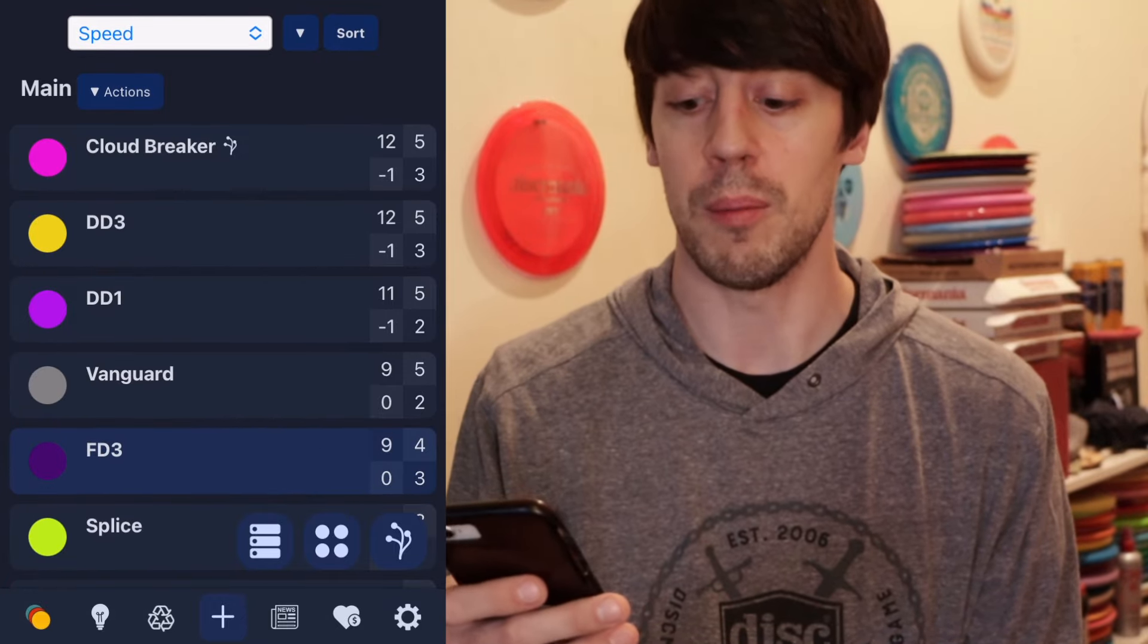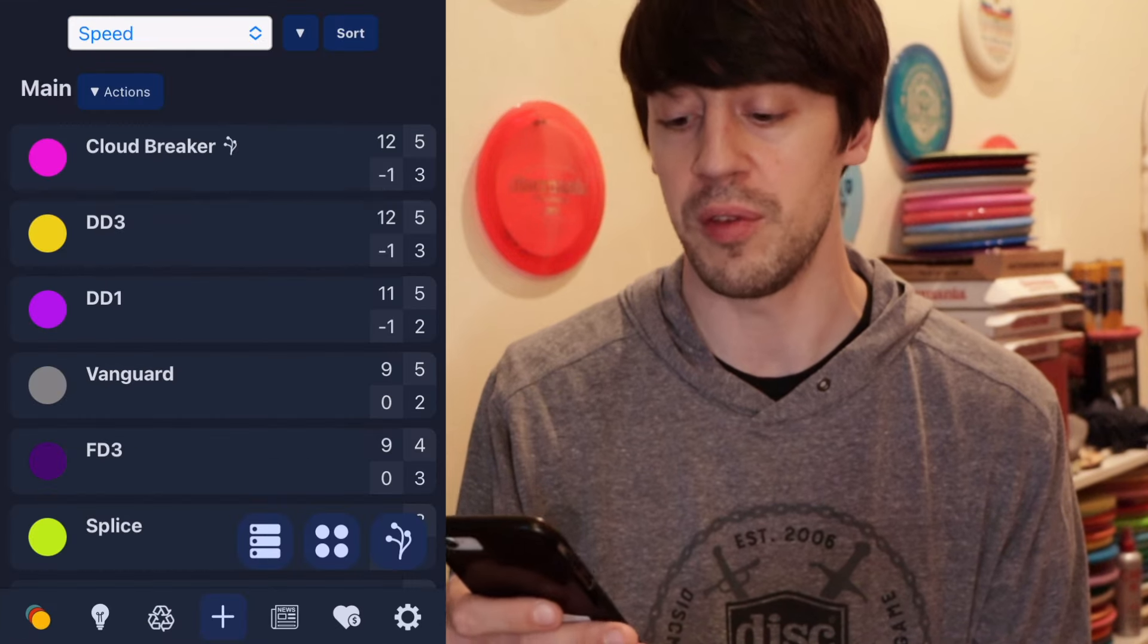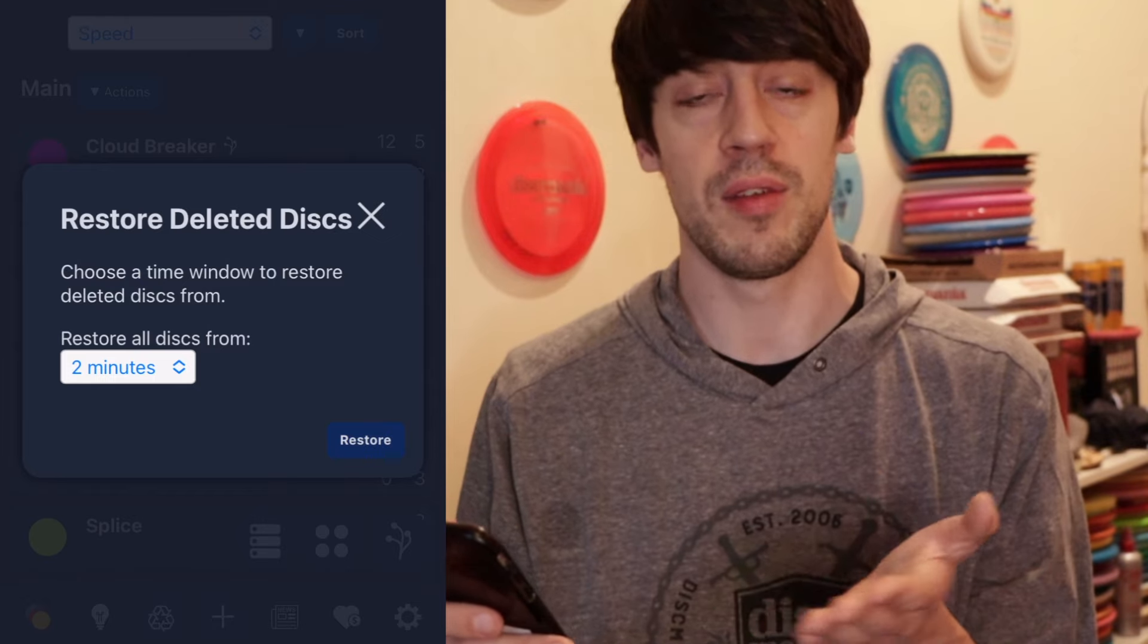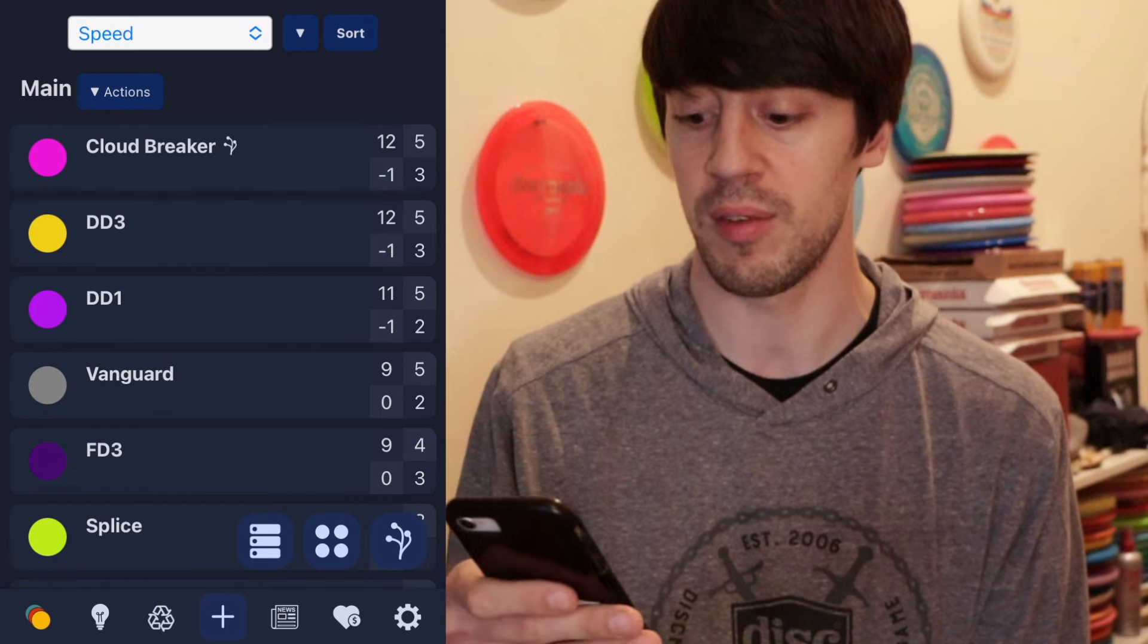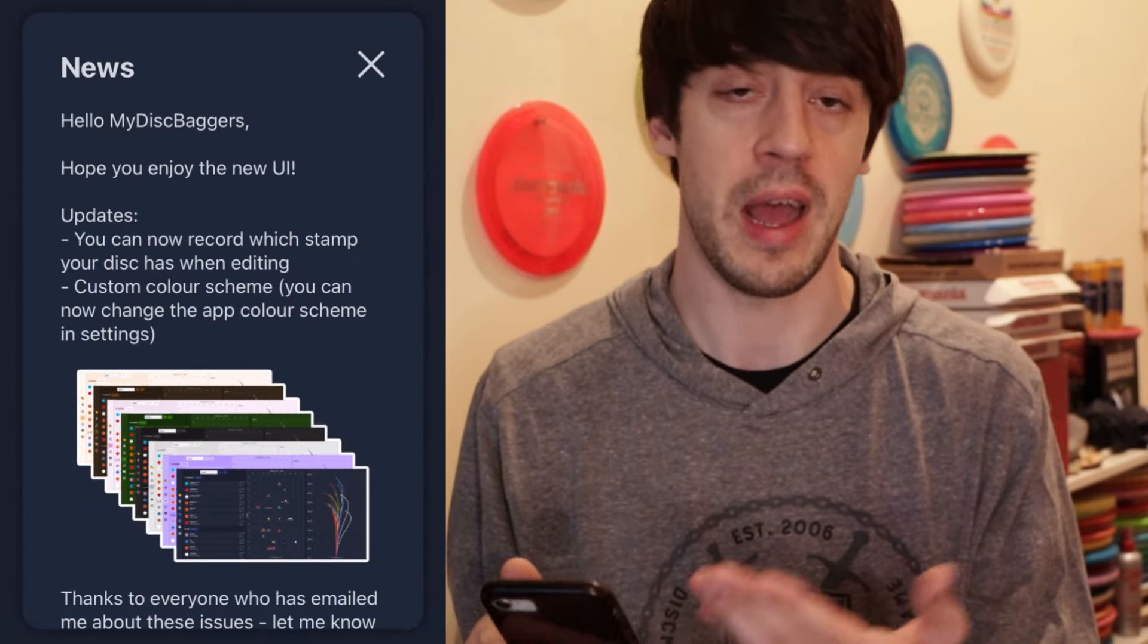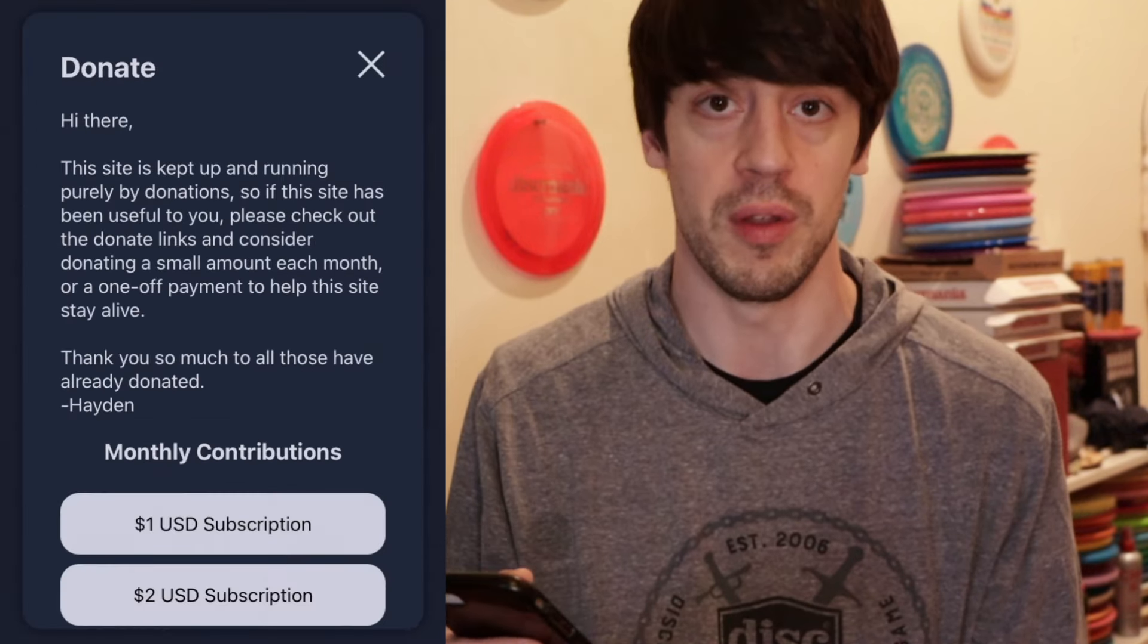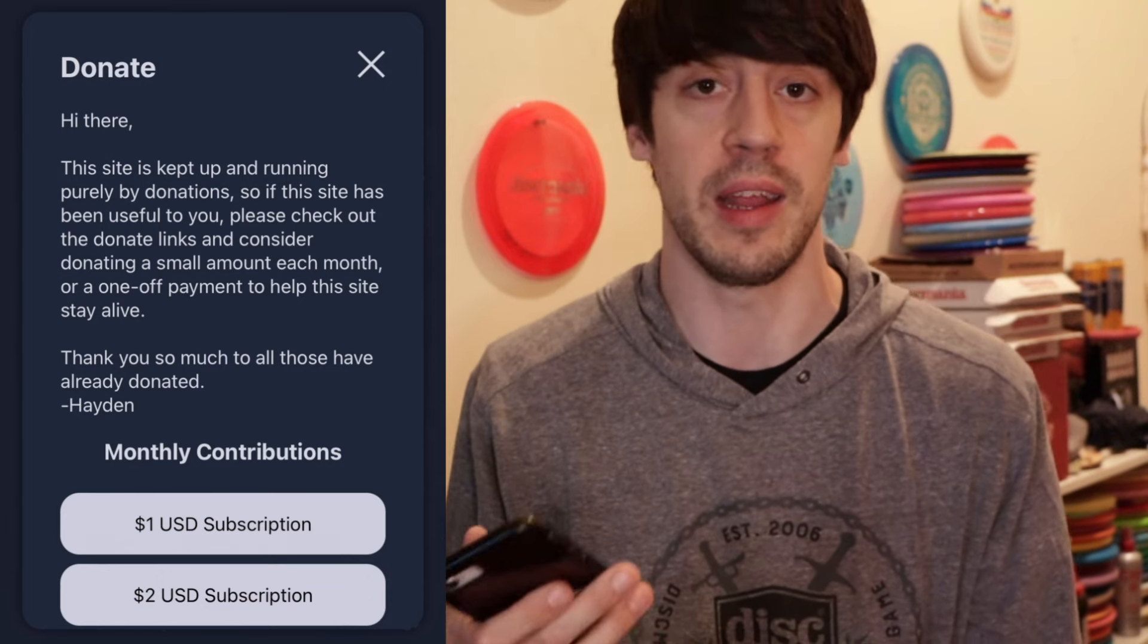And then even on the bottom there's a couple more tabs. The light bulb also gives you disc suggestions similar to what we saw on the chart. This little recycling thing restores deleted discs so if you take discs off and you want them back you can use this to restore those discs. News section is just for the owner or the creator of the app to share any new news with you. And the next one is just for donations because it's a free app but obviously it's gonna cost some money to create and keep up to date.